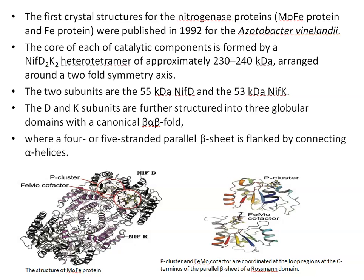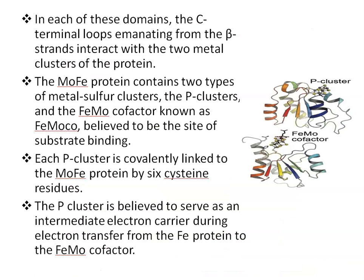The D and K subunits are further structured into three globular domains with a canonical beta-alpha-beta fold. You can see four or five standard parallel beta sheets — arrow-like structures — which are flanked by connecting alpha helices, which are coiled structures. Each of these domains has C-terminal loops emanating from beta strands that interact with the two metal clusters of the protein.